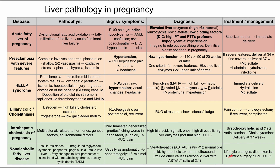The treatment is lifestyle changes — diet and exercise. If it's a big problem and the person is severely overweight with a BMI over 35, you can consider bariatric surgery, which would of course happen after pregnancy. So this was just a short video on liver pathology in pregnancy. I hope it was helpful. Thank you for listening.